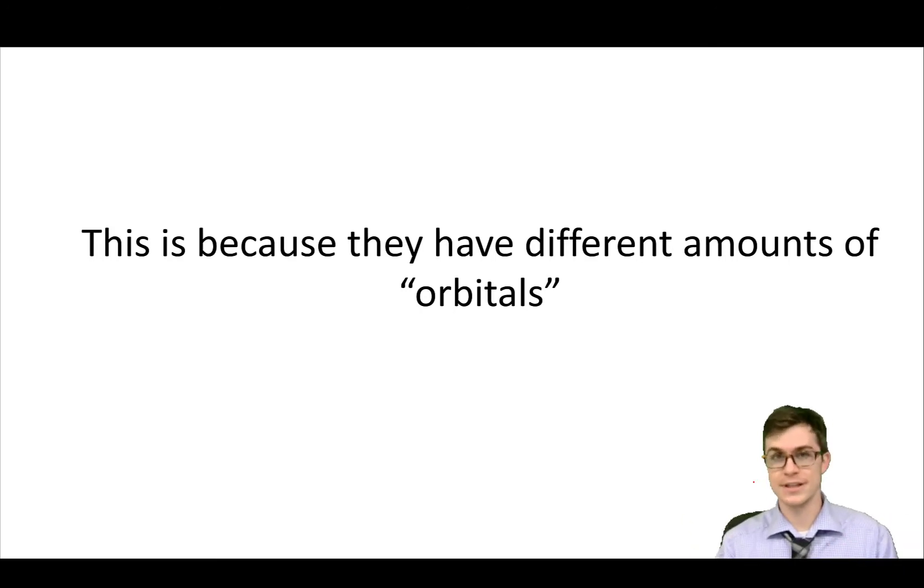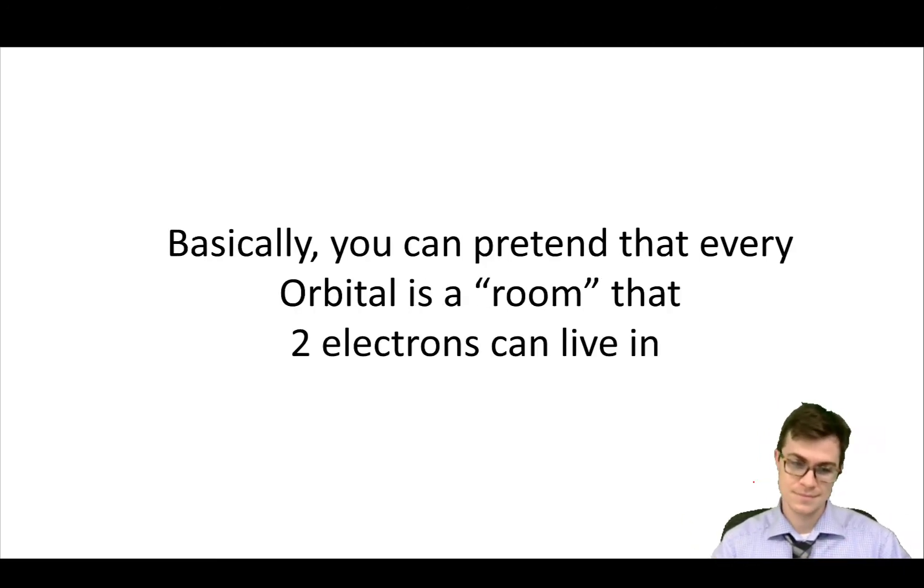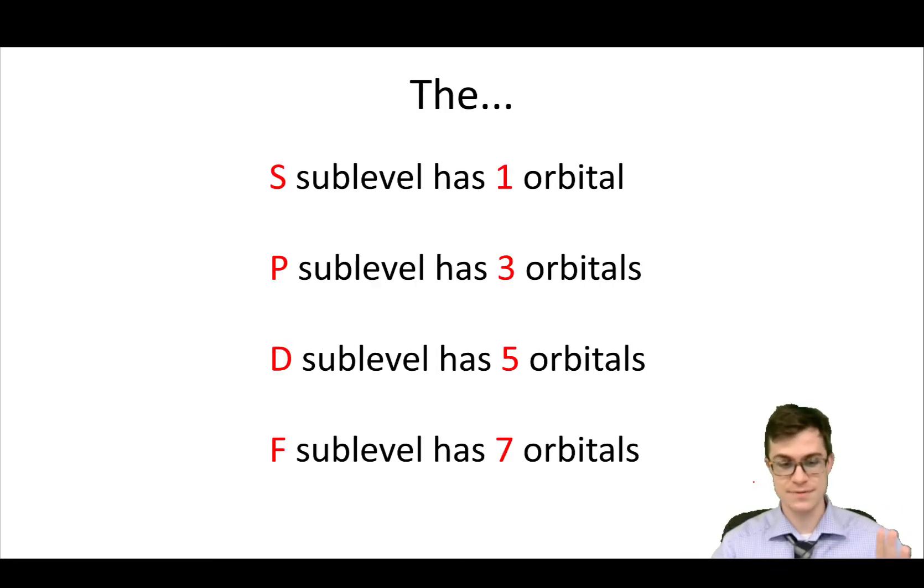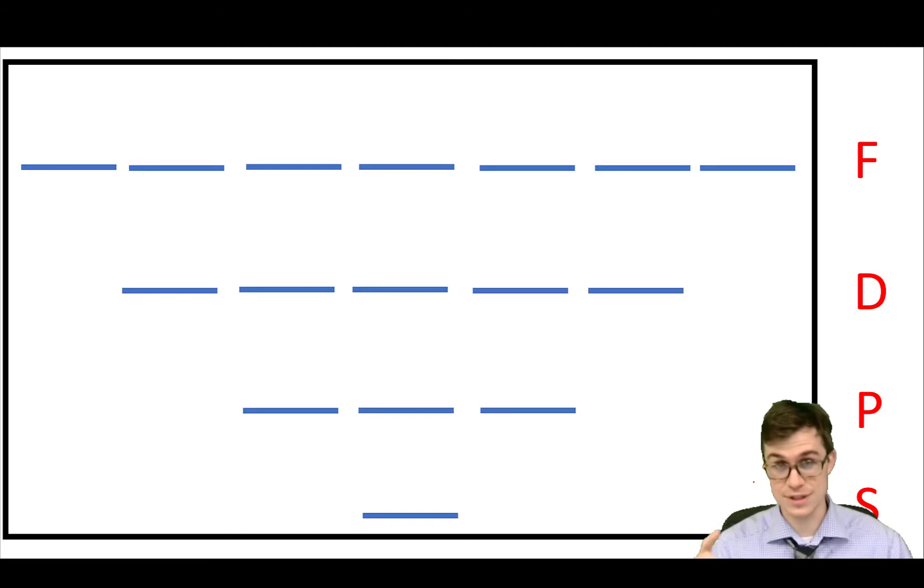There are ones above this, but we don't normally talk about them in introductory chemistry. And you can pretend like every shape has a different number of orbitals, and every orbital is like a room that two electrons can live in. Basically the S sublevel has one orbital, the P has three, the D has five, and the F has seven. This is the way that you should think about it.